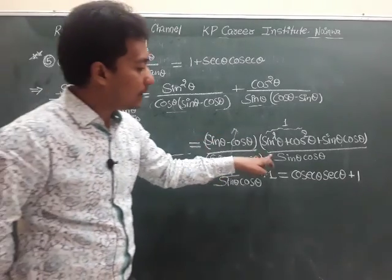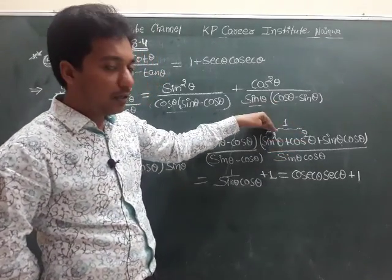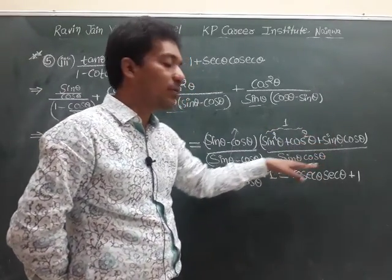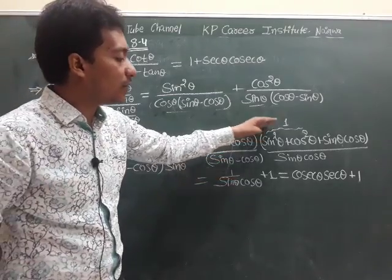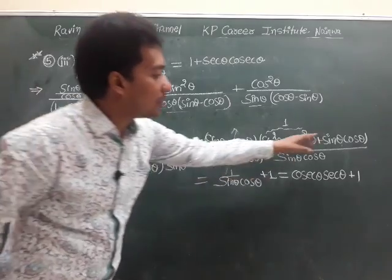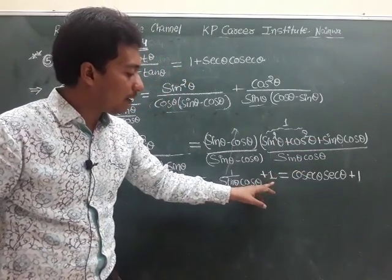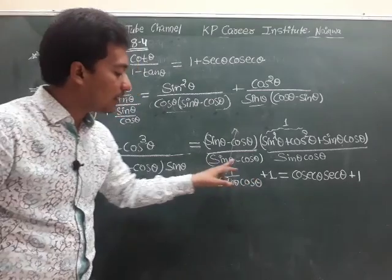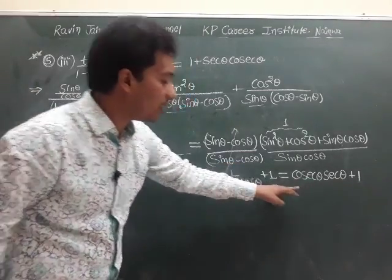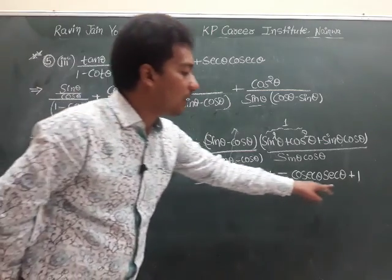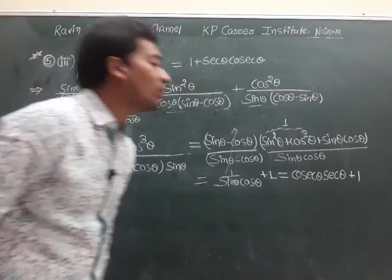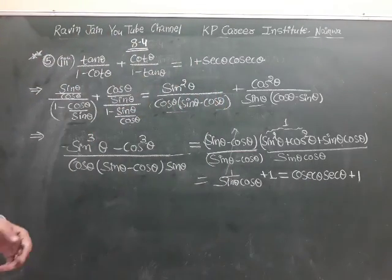Using the identity a³ - b³ = (a - b)(a² + ab + b²), we write sin³θ - cos³θ = (sin θ - cos θ)(sin²θ + sin θ·cos θ + cos²θ). The (sin θ - cos θ) cancels. Since sin²θ + cos²θ = 1, we get (1 + sin θ·cos θ) / (sin θ·cos θ) = 1/(sin θ·cos θ) + 1 = cosec θ·sec θ + 1, which equals RHS.